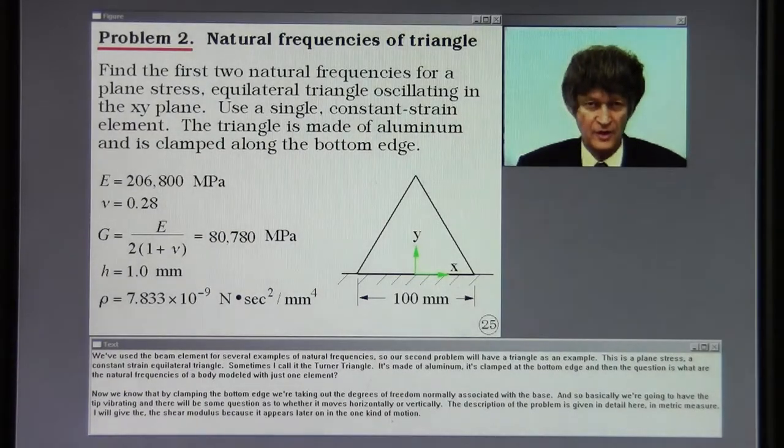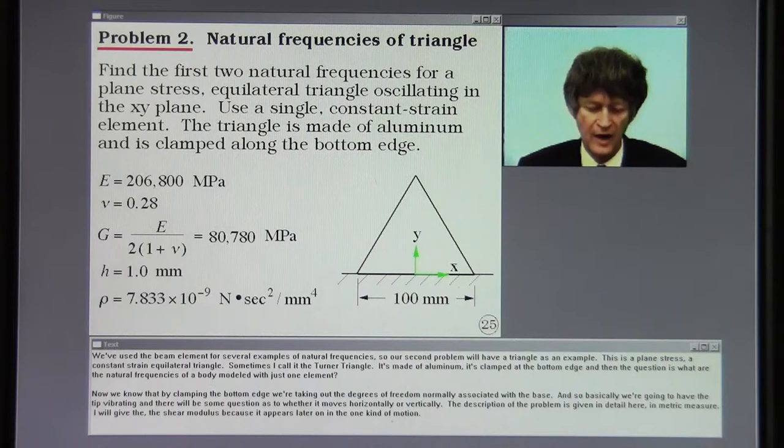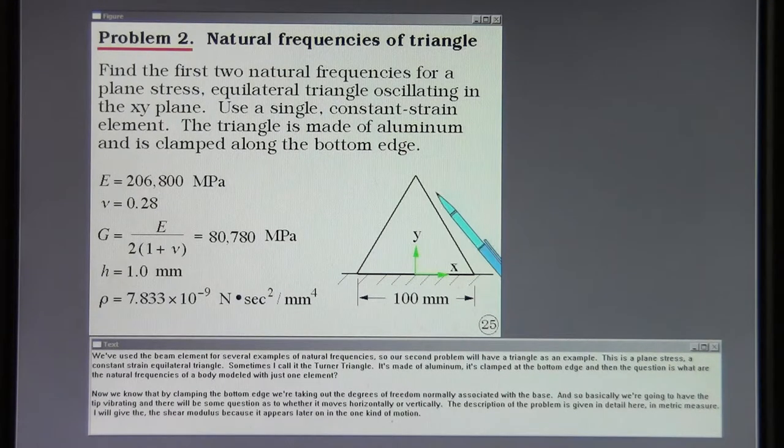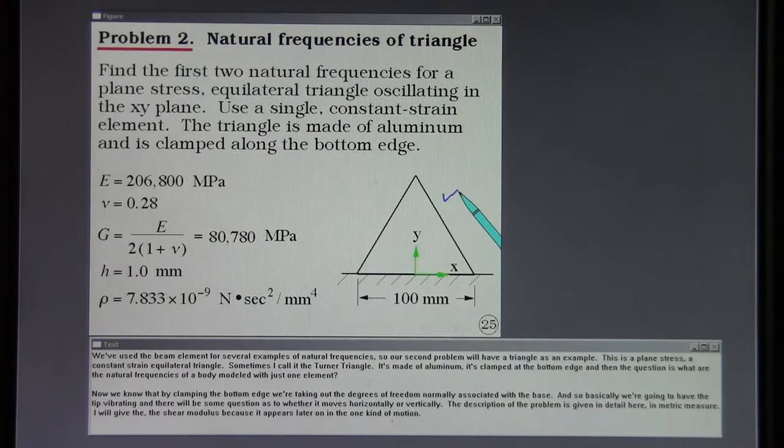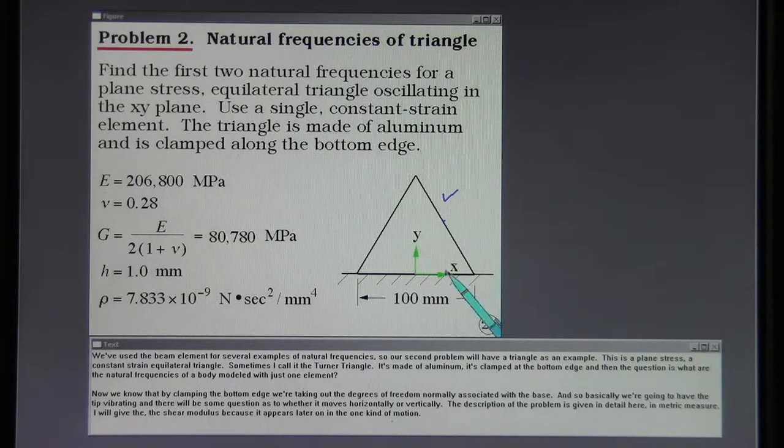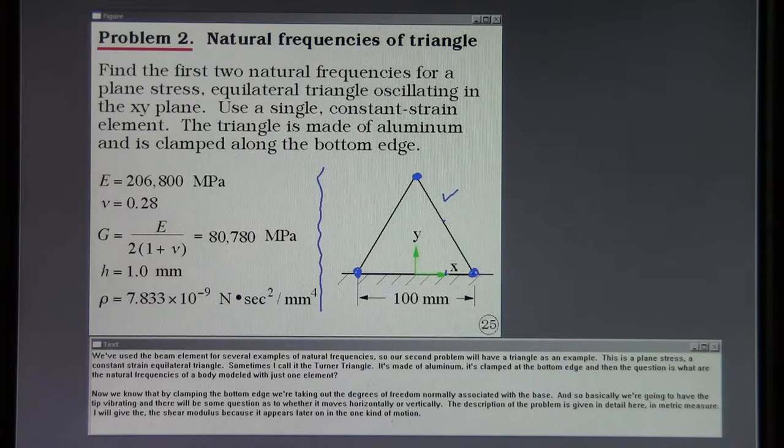We've used the beam element for several examples of natural frequency. So our second problem will have a triangle as an example. This is a plain stress, constant strain, equilateral triangle. Sometimes I call it the Turner Triangle. It's made of aluminum. It's clamped at the bottom edge. And then the question is what are the natural frequencies of a body modeled with just one element? Now we know that by clamping the bottom edge, we're taking out the degrees of freedom normally associated with the base. So basically we're going to have the tip vibrating and there will be some question whether it moves horizontally or vertically. The description of the problem is given in detail here in metric measure. I will give the shear modulus because it appears later on in the one kind of motion.